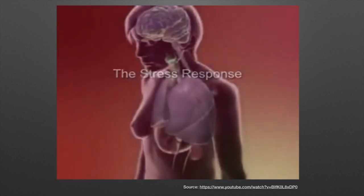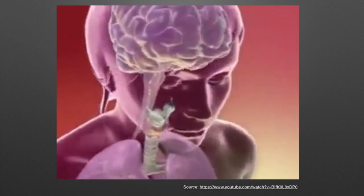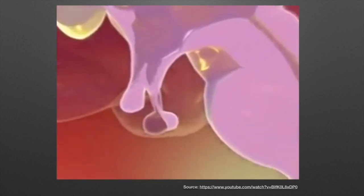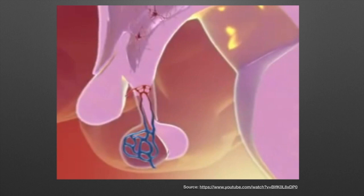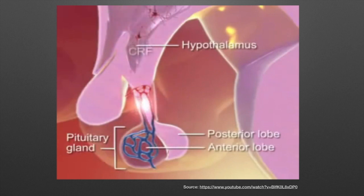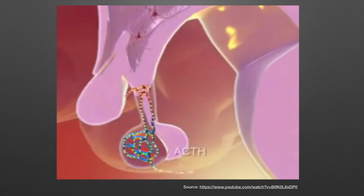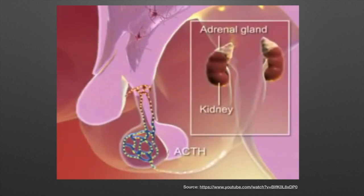In stressful situations, the body switches on its autonomic nervous system and neurobiological processes in an attempt to maintain homeostasis — the body is prepared for its reaction to stress. In the brain, the hypothalamus is connected to the pituitary gland. The hypothalamus, stimulated by the sympathetic nervous system, releases the hormone corticotrophin-releasing factor, CRF. The CRF then activates the pituitary gland to release the adrenocorticotrophic hormone, ACTH.